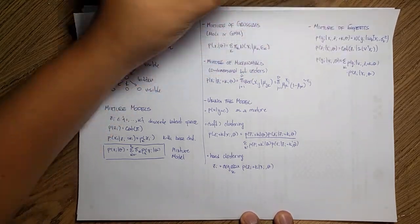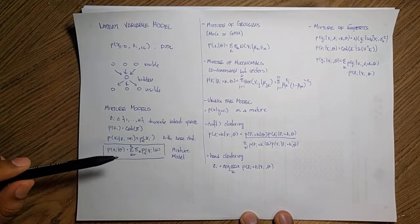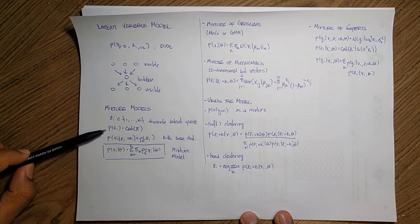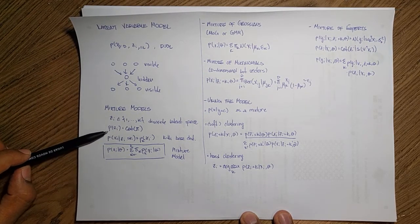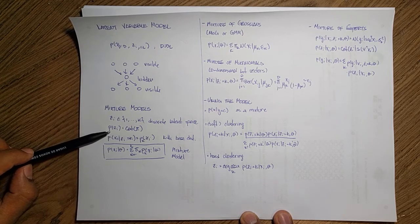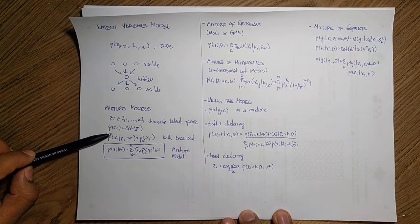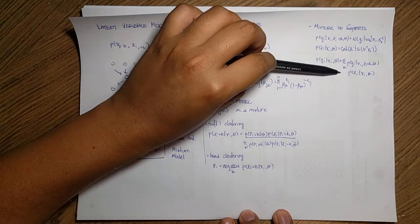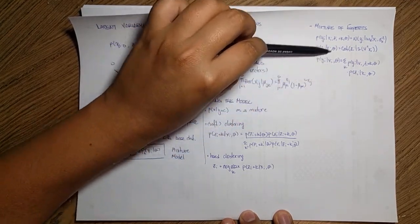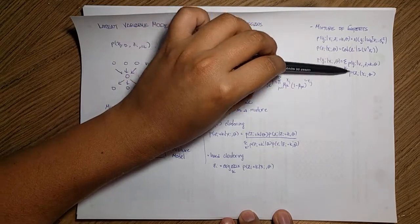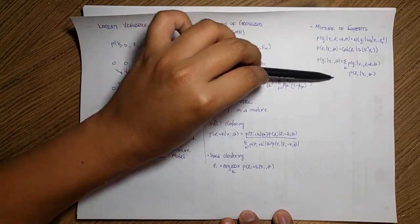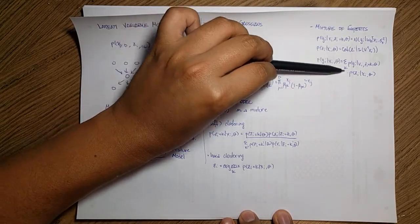If you see here, like the main difference between this PC given XI and this model over here is like my PC is fixed. Like I have some prior information. I'm going to use that prior to weight all my experts. In this case, I'm going to use the information that comes from the data. So I am kind of adaptively changing my belief of the different categories.